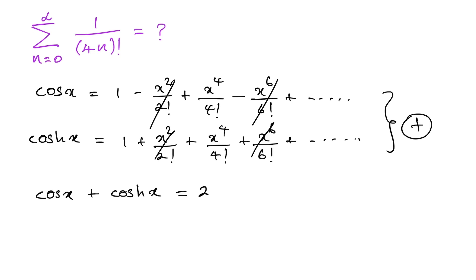So we have 2 times 1 plus x to the 4th power over 4 factorial plus x to the 8th power over 8 factorial plus so on.